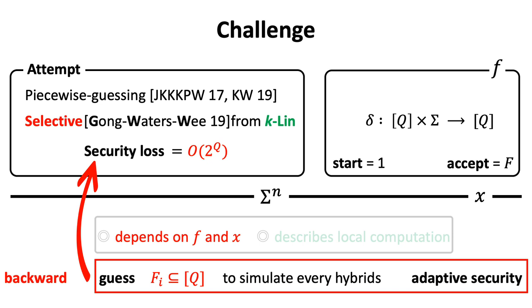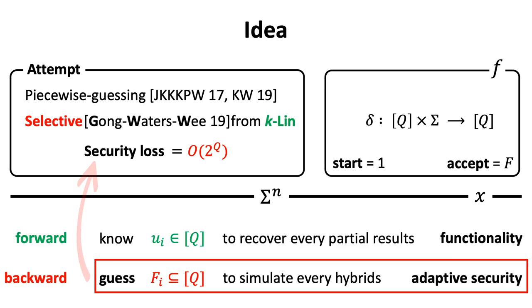Even though, we must know that this has been interesting since we avoid guessing input x directly which causes even larger security loss since n is typically larger than Q. However, this line isn't dead.